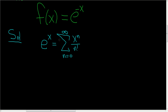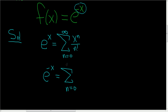In particular, it converges when you plug in negative x. So e to the negative x is equal to the infinite sum, as n runs from 0 to infinity, of the quantity (negative x) to the n divided by n factorial.